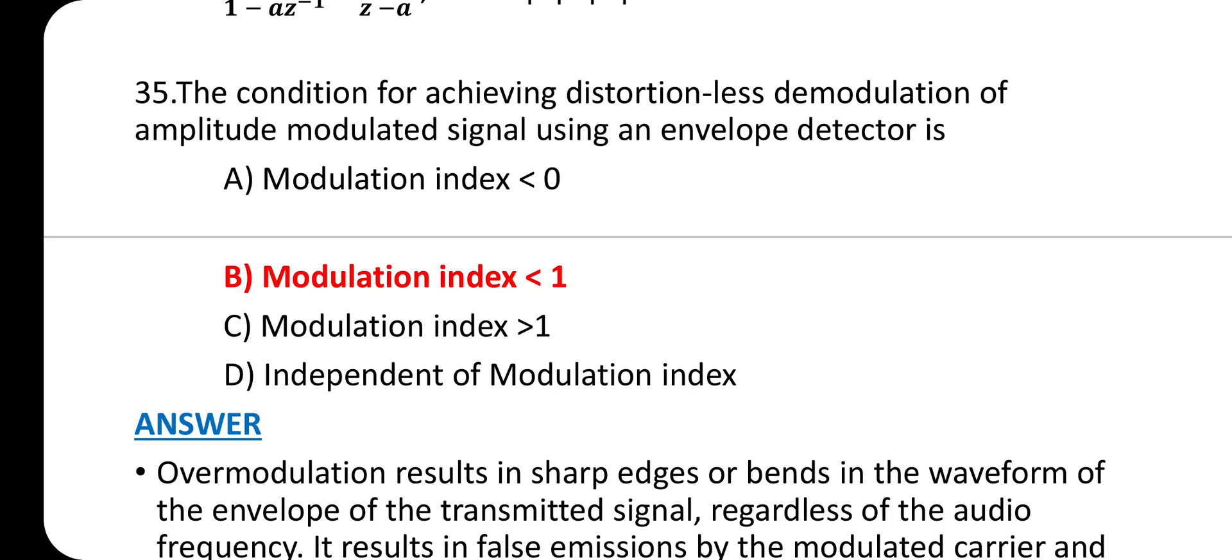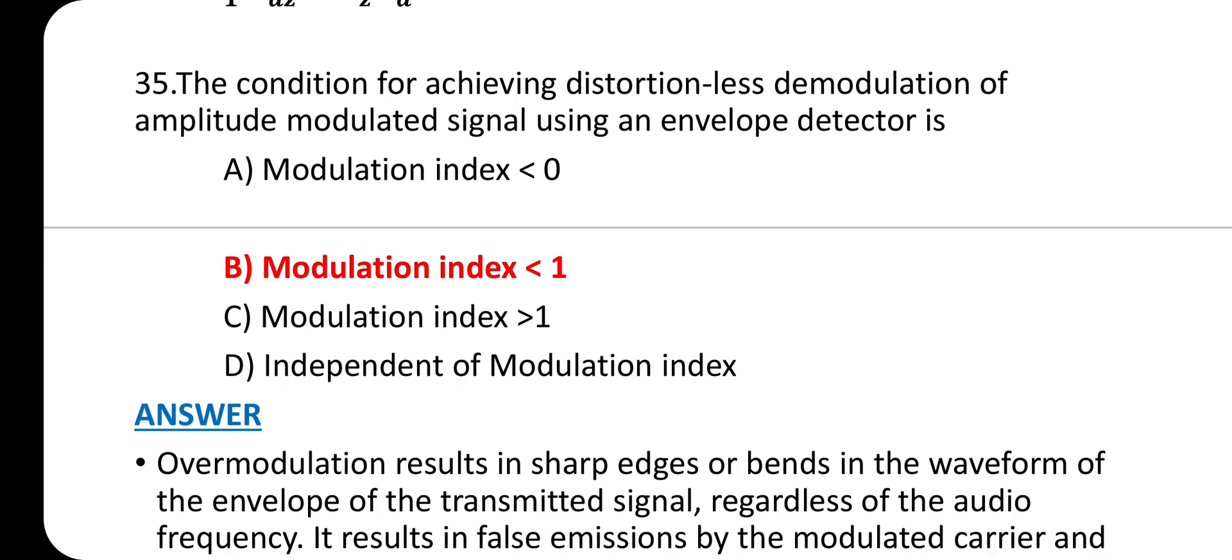Question 35: The condition for achieving distortion-less demodulation of amplitude modulated signal using an envelope detector is answer option B: modulation index less than 1.